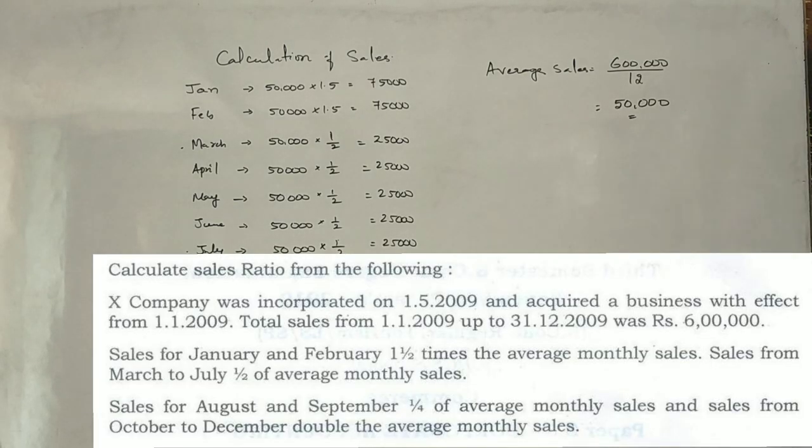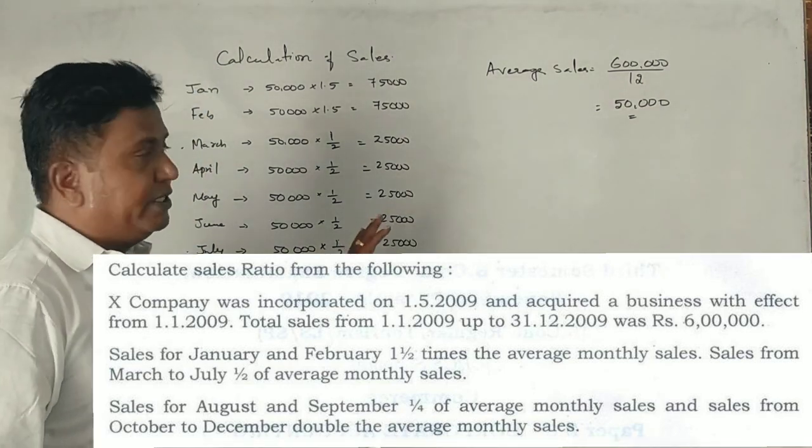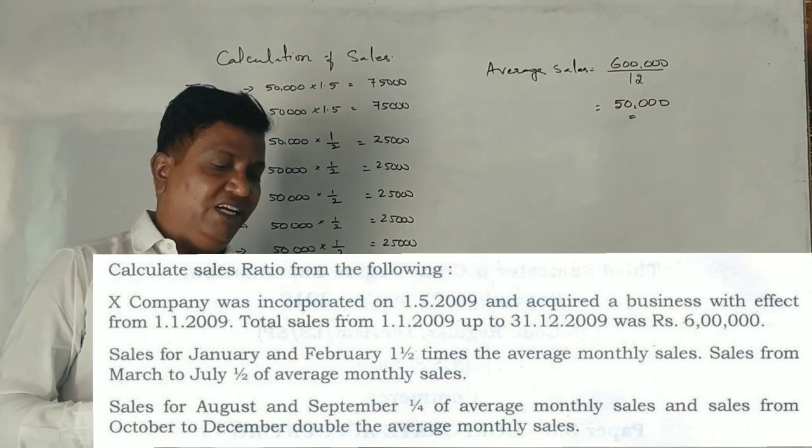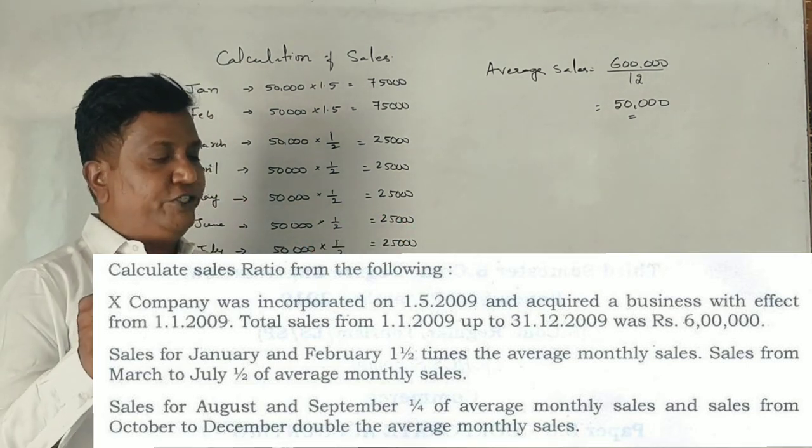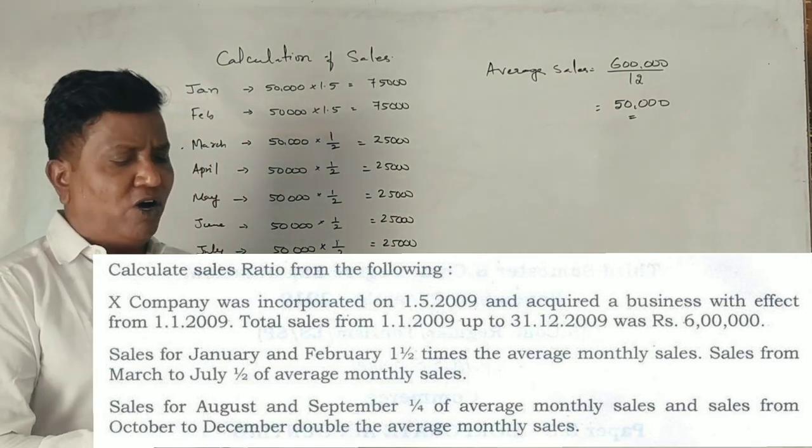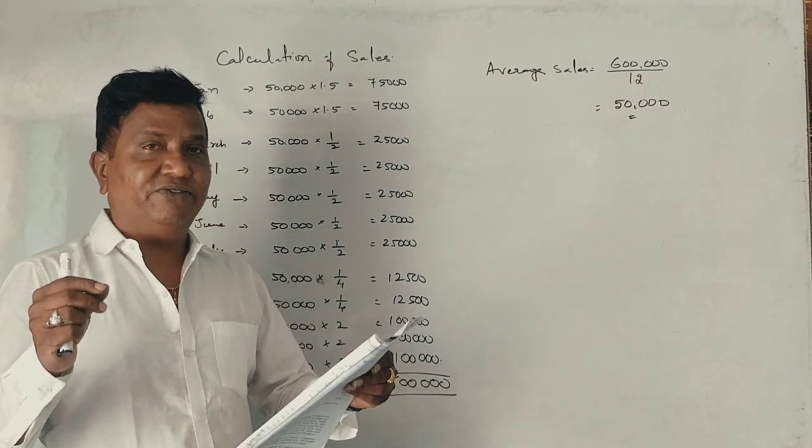The profit prior to income calculations. Calculate sales ratio from the following: X company was incorporated on 1st May 2009 and acquired a business from 1st January 2009.